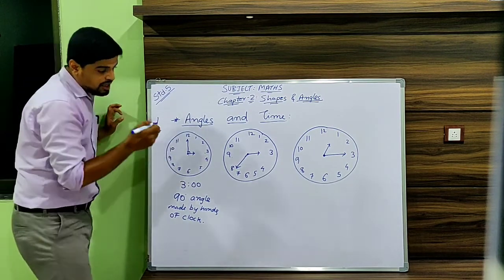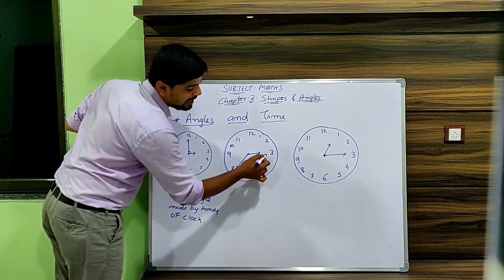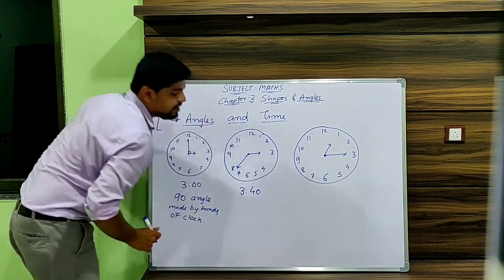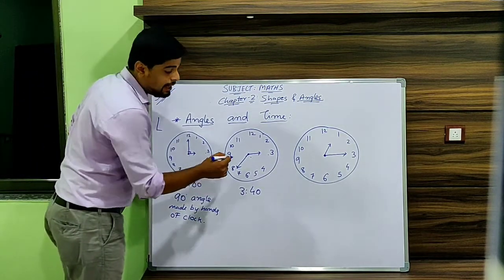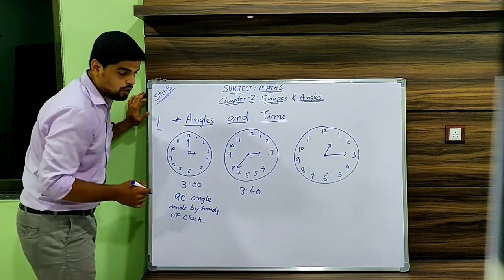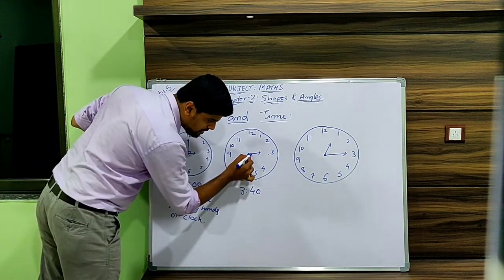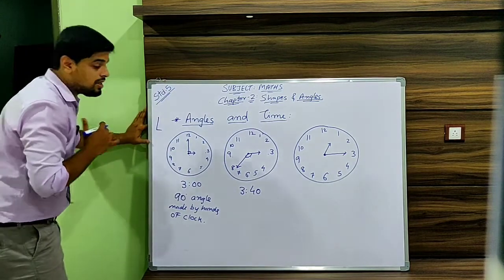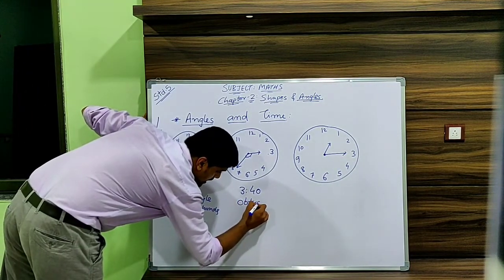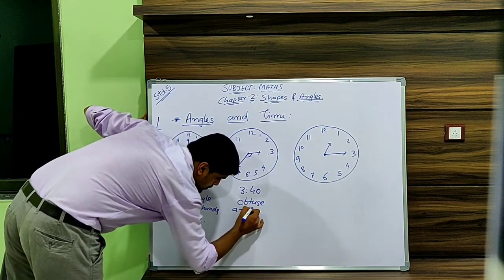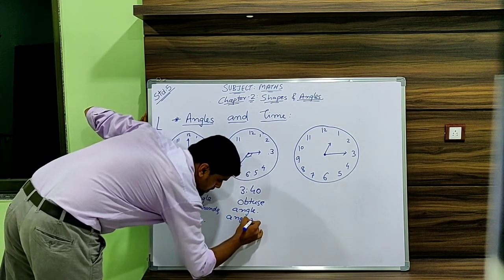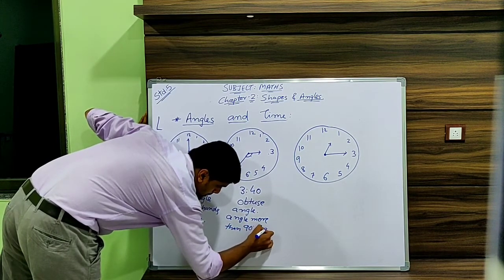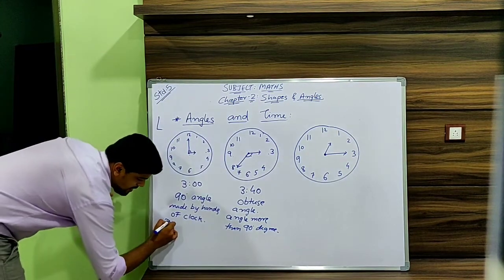Let's take another example. The minute hand is at 8 and the hour hand is at 3, so the time is 3:40. Now let's see what angle is made by the two hands of the clock. As you can see, this distance is more than 90 degrees, so more than 90 degrees means an obtuse angle — the angle is more than 90 degrees.